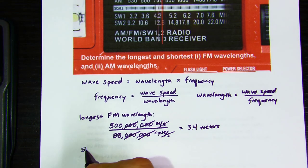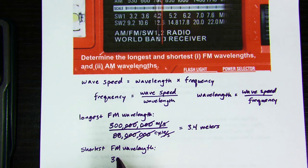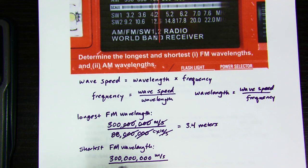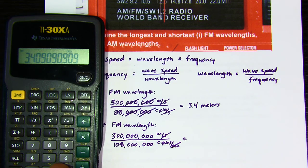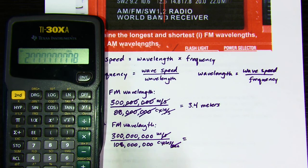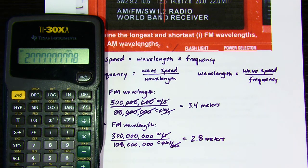Shortest FM: same kind of idea — 300,000,000 meters per second, now divided by 108,000,000 Hertz — works out to about 2.8 meters. So the average FM wavelength is in the ballpark of about 3 meters.